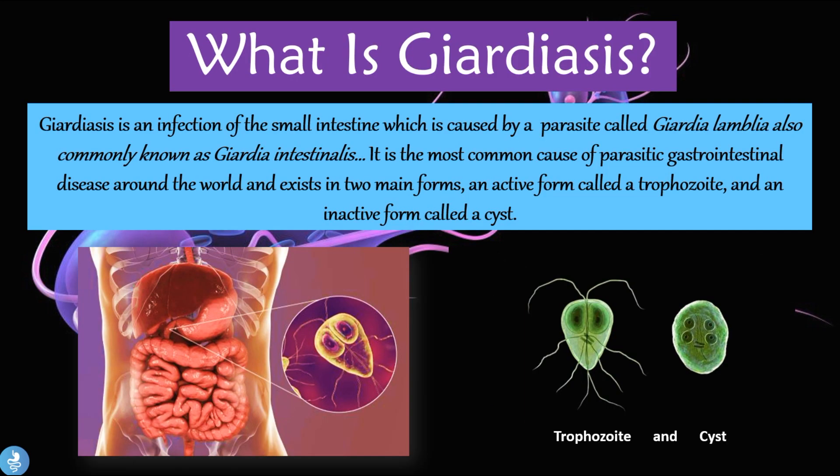Giardiasis is an infection of the small intestine which is caused by a parasite called Giardia lamblia, also commonly known as Giardia intestinalis. It is the most common cause of parasitic gastrointestinal disease around the world, and exists in two main forms: an active form called a trophozoite and an inactive form called a cyst.